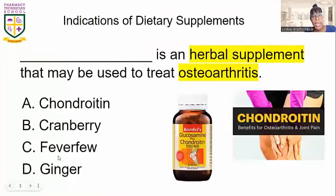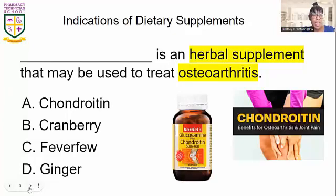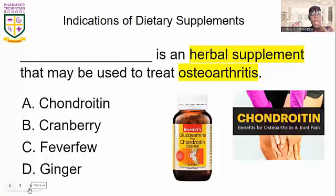The next one: indication of dietary supplements. So these are like vitamins — herbal, natural things that we can buy over the counter. It says blank is an herbal supplement that may be used to treat osteoarthritis. The answer is letter A. Make sure you write this down because dietary supplements is on the PTCB blueprint. If you Google 'PTCB blueprint for 2023,' it will give you an outline of everything that is going to be covered on your exam.